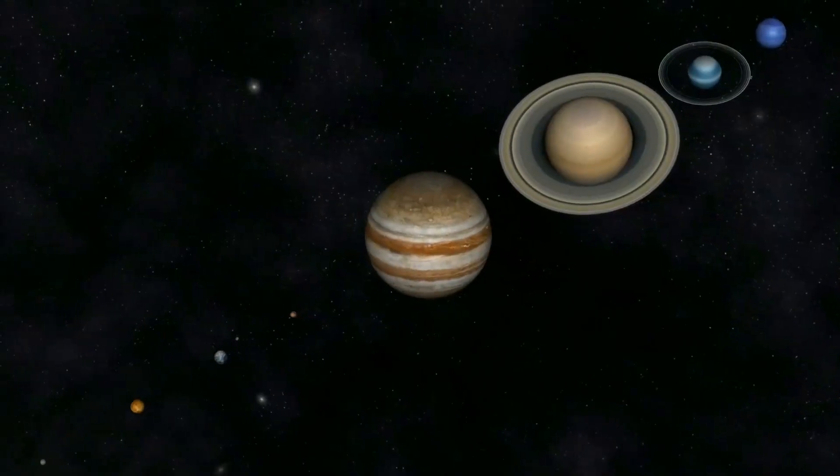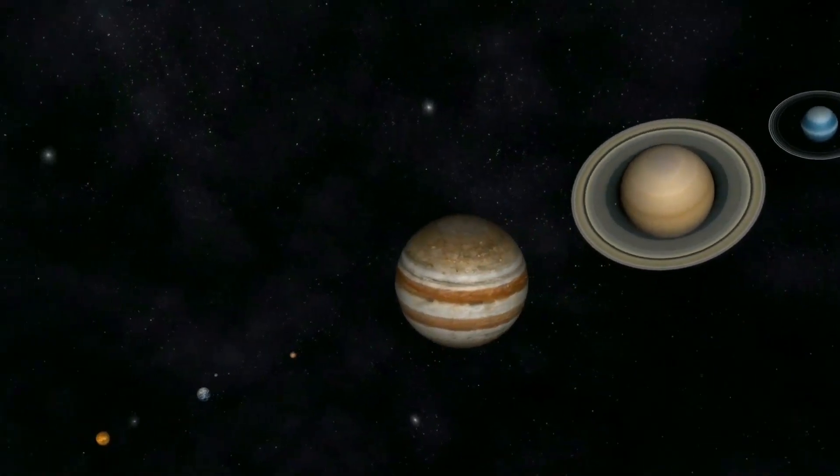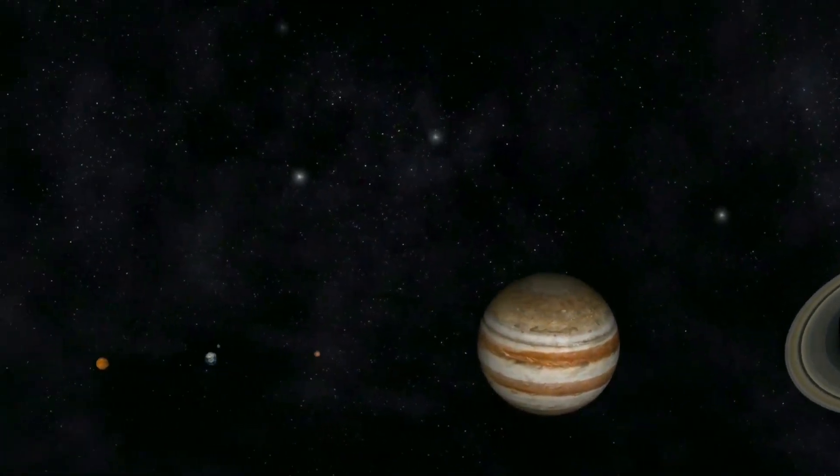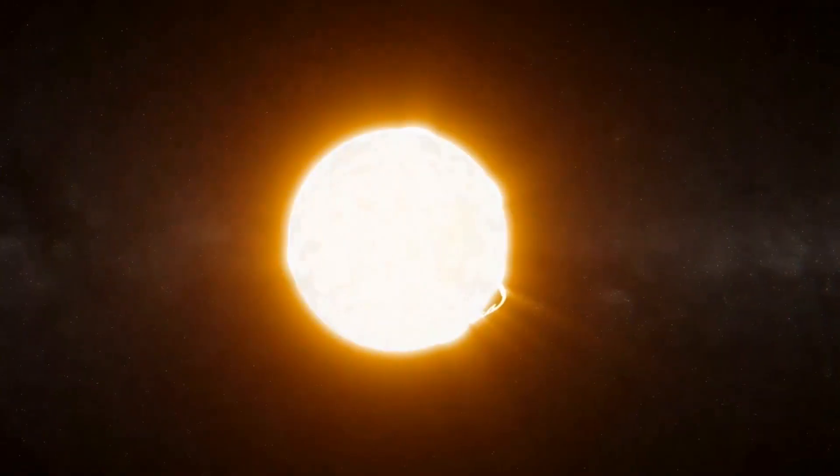It's well known that the Sun consistently spews out shockwaves of plasma called coronal mass ejections, which help shape the rest of the solar system. Turns out the Sun's impact goes beyond its own borders.